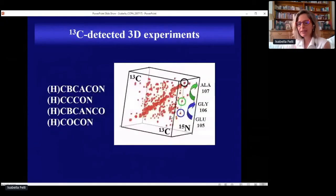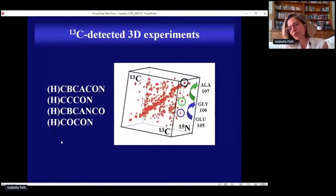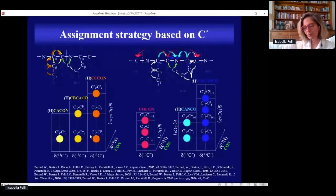Once we have all the blocks, we can combine them. Assuming we have our CON, we can add an additional dimension and get a set of three-dimensional experiments to provide the interesting information for sequence-specific assignment, borrowing all the nice building blocks developed throughout the years. Here is a scheme of the available experiments for carbon detection to either identify all the spin systems or get the sequence-specific correlations. These experiments nowadays we run in a routine way for any IDP because they are the most sensitive ones.